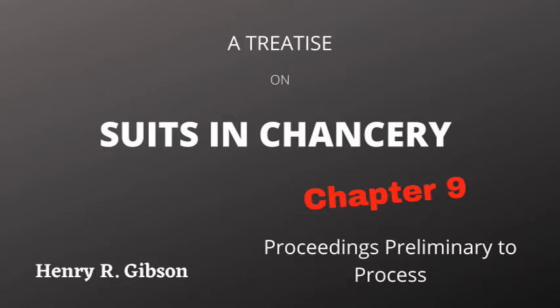Fiat for an injunction to the clerk and master of the chancery court at, naming the town where the court is held in which the bill is to be filed. Issue a writ of injunction as prayed in the foregoing bill, on complainant giving bond therefore in the penalty of, naming the sum. December 4, 1890. S. A. Key, Chancellor.